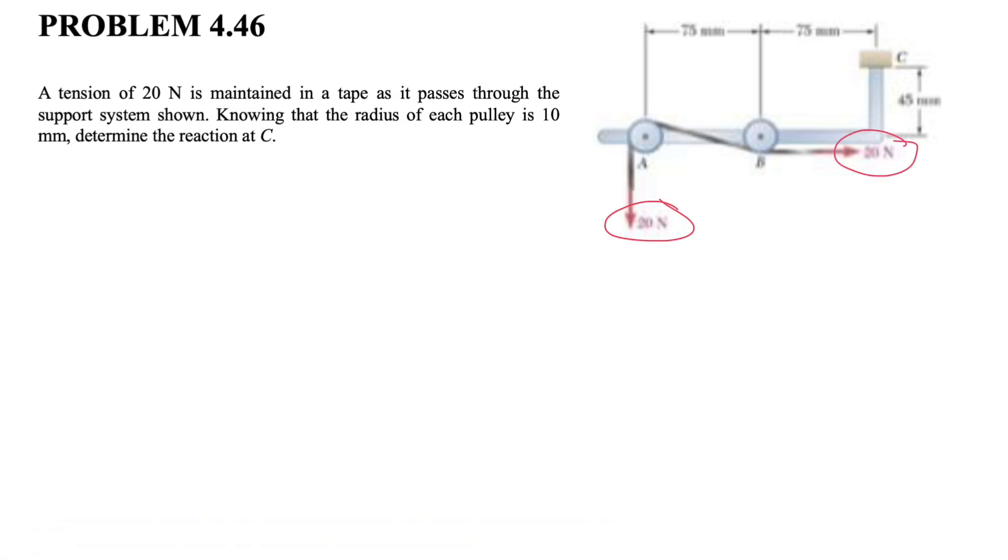As always, we're going to start with the free body diagram. So we have a bar that is like this. At point C, we have a fixed support, and we know in a fixed support we have both X and Y components.